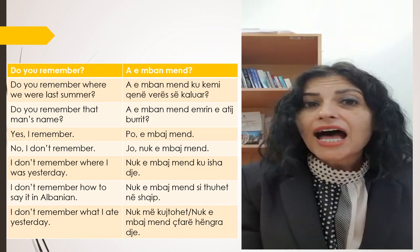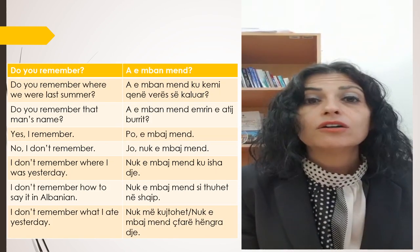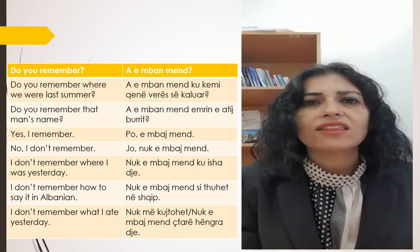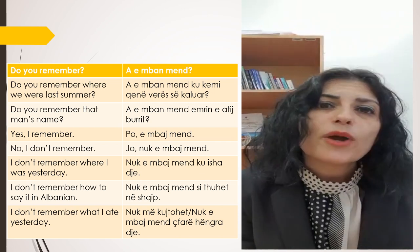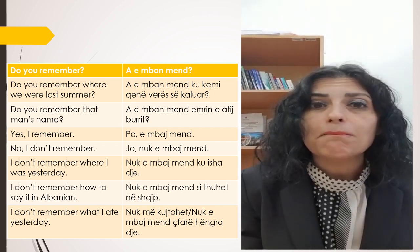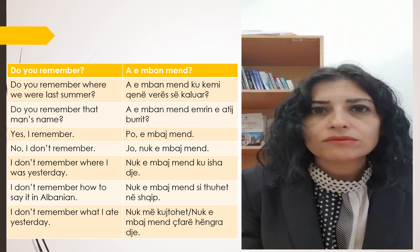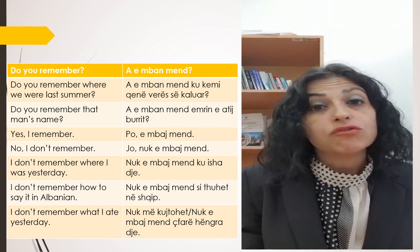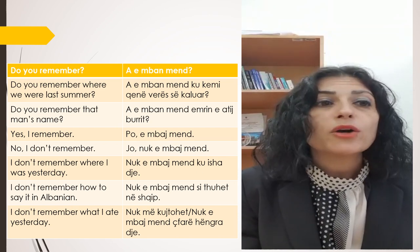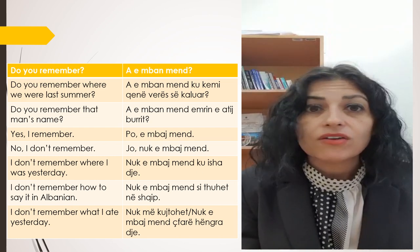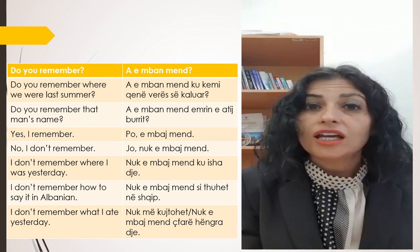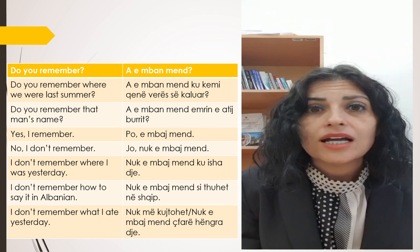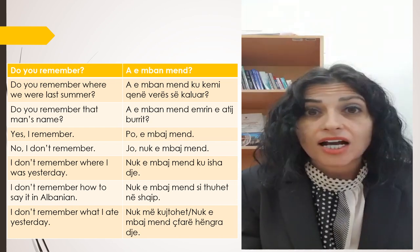Now, there is another form that we use in Albanian. For example, 'do you remember that thing that happened?' In Albanian language we are going to use this other form: 'a e ban ment'. For example, 'do you remember where we were last summer?' In Albanian: 'a e ban ment ku kemi qenë verës së kaluar?'